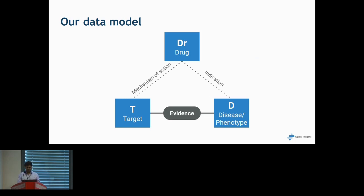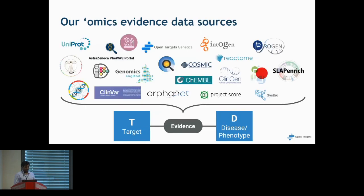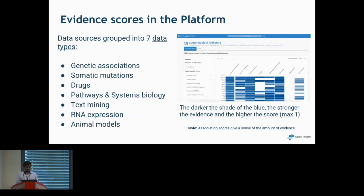For example, if there is an approved drug in the ChEMBL database and we know its mechanism of action — which molecules it targets — and we know its indication, that constitutes a piece of evidence linking that target to a disease. We use over 20 different data sources to connect all these evidences, which are then characterized into seven different types: genetic associations, somatic mutations, drugs, pathways and systems biology, text mining, RNA expression, and animal models. Each has a particular association score, and we use harmonic scores to calculate these.